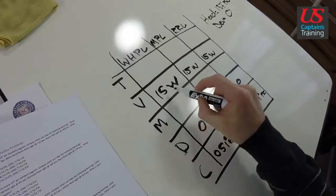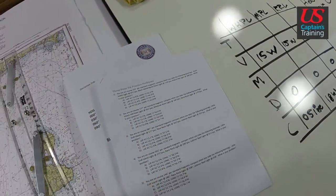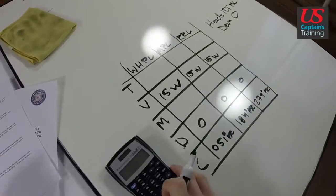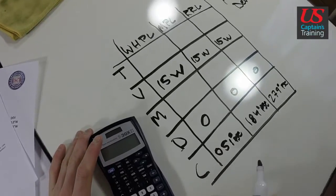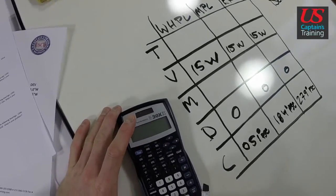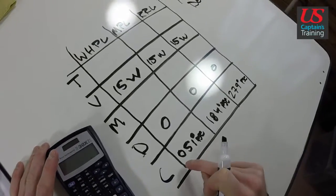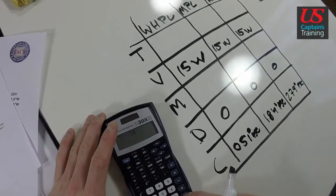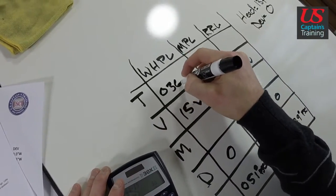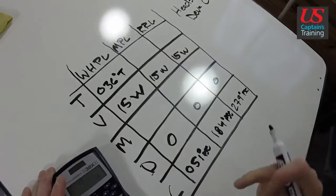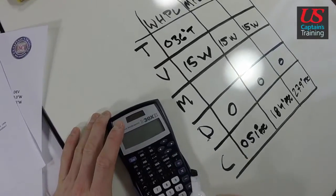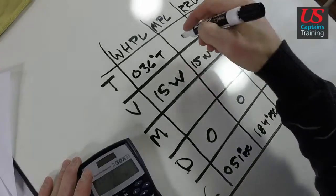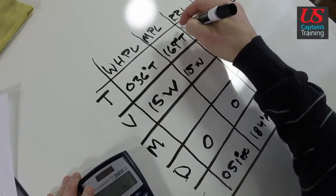We're going up, we're going to subtract west. And let's do that. I like to do these with a calculator even though I can do them in my head. I like to double check them with the calculator. 51 minus 15 equals 036 degrees true.